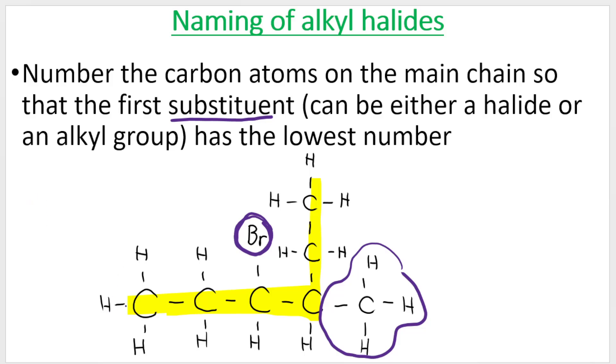Now we need to number this chain so that overall, they have the lowest possible number. We can either number it like this: 1, 2, 3, 4, 5, 6. If I choose the red numbering, my branch is on carbon 3 where I have the bromo, and on carbon 4 I have the methyl, so 3 plus 4 gives me 7.